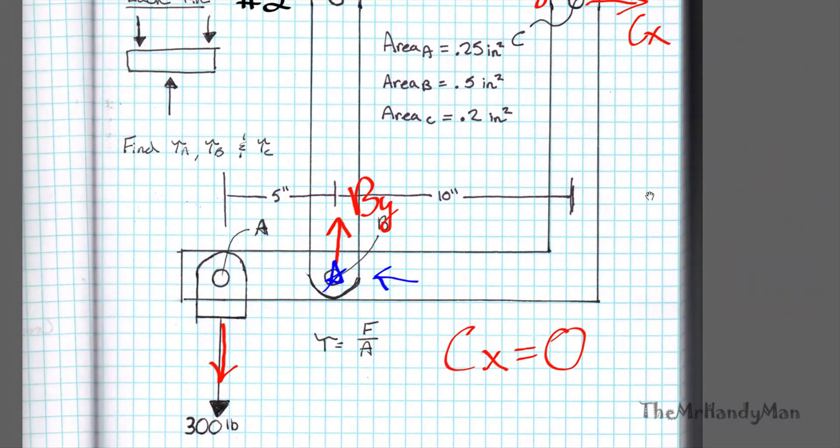And then we'll use the summation of forces to solve for By. But since By is on the actual point of rotation, there's no moment going to be reactant because the linkage arm, or the distance from the point, is zero. So it just cancels out.